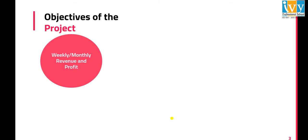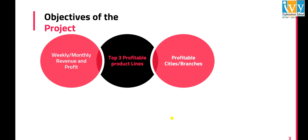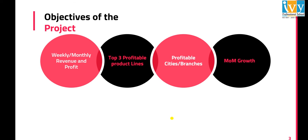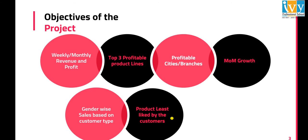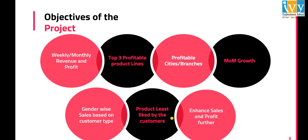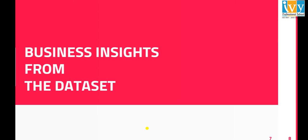The objectives of the project are to analyze the weekly and monthly revenue and profit, the top three profitable product lines, profitable cities and branches, month-on-month growth, gender-wise sales based on customer types, product lines liked by the customer, and to enhance sales and profit further.